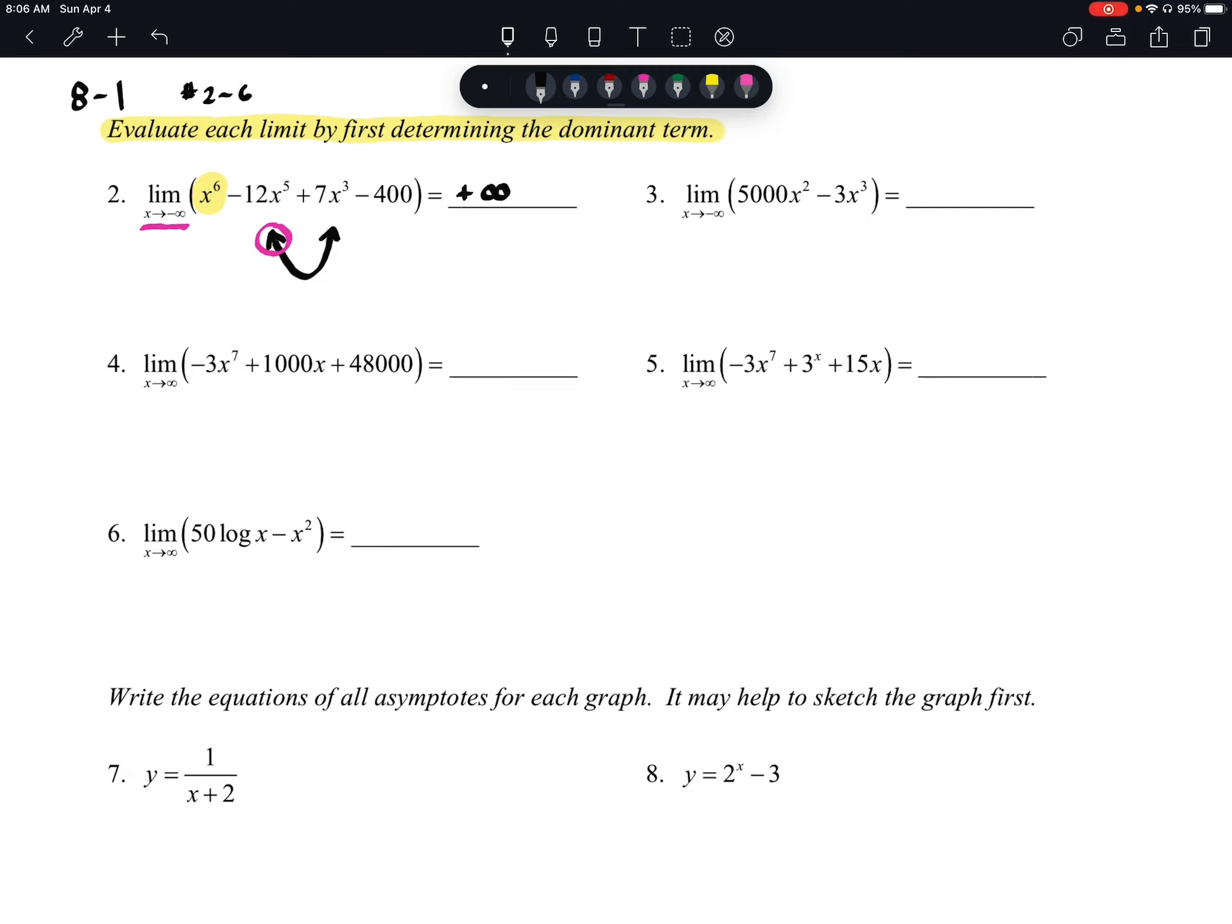Let's look at number 3. The limit as x approaches negative infinity again of 5000 times x squared minus 3 times x to the 3rd power. As we're trying to identify our dominant term, it would be the minus 3x to the 3rd.